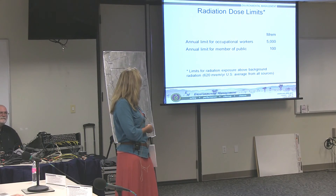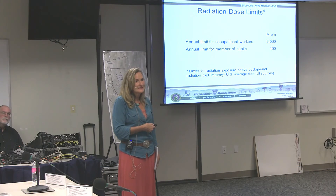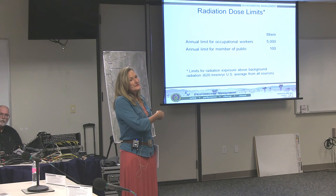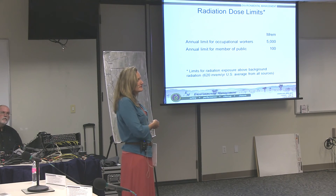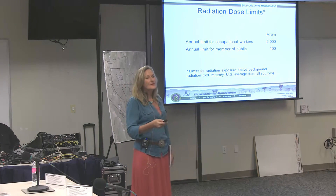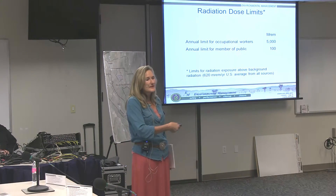Annual dose limits: for an occupational worker trained on radiation hazards, the limit is 5,000 millirem per year — five REM. The annual limit for a member of the public is 100 millirem. This is cumulative — from both internal and external sources. To put it in perspective: the average background dose is already 620 millirem, so the additional 100 millirem public limit is fairly insignificant compared to what we're naturally exposed to just by being on Earth.